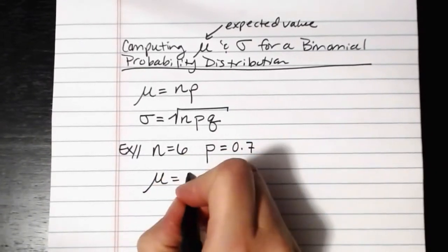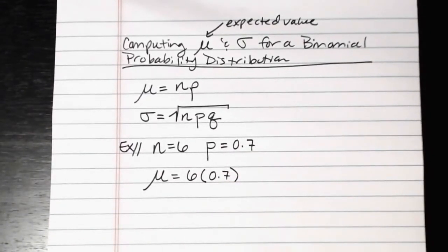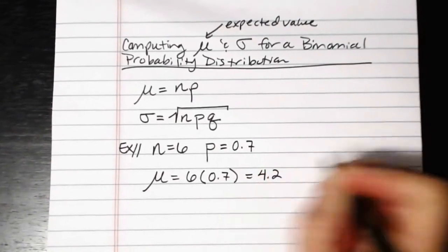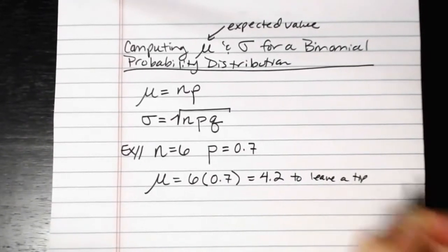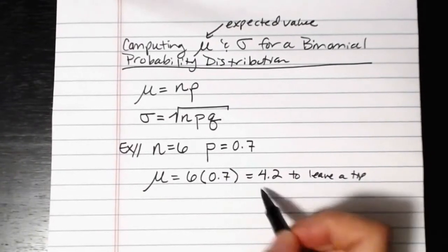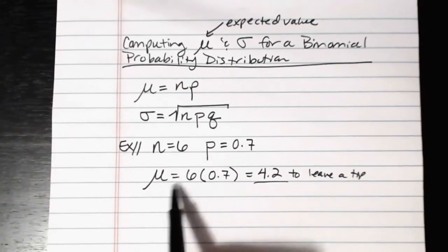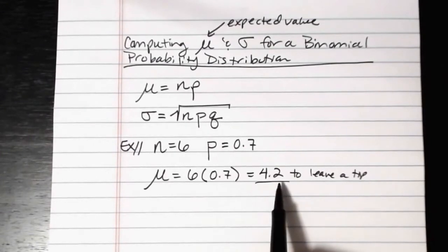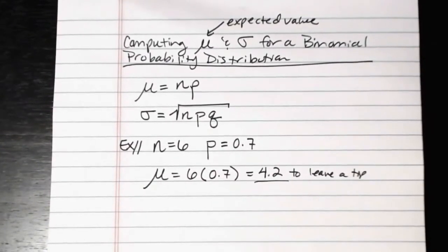The mean is equal to n, the number of trials, which is 6, times the probability of success, which is 0.7. Multiplying those together gives us 4.2, meaning we expect 4.2 people to leave a tip. It's tempting to round that, but we leave it as 4.2 — even though you can't have 0.2 of a person. This is like when a news story says the average family has 2.3 children; the decimal is just an artifact of the formula. We don't do any rounding here.